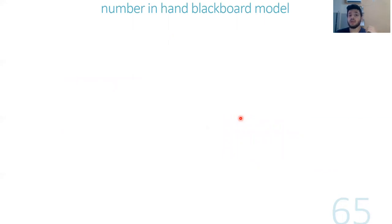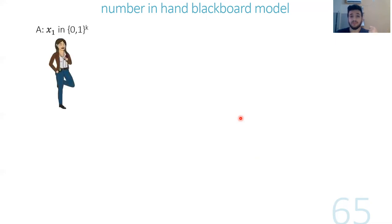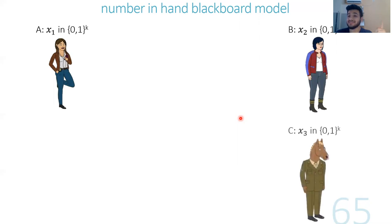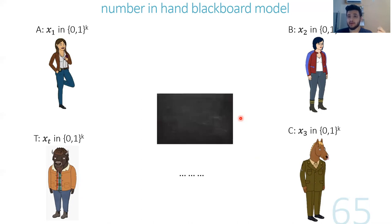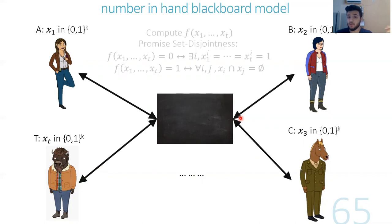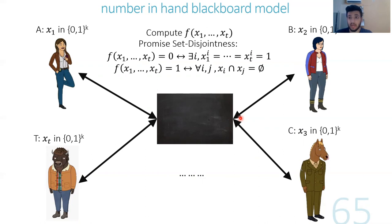I mean the number-in-hand blackboard model of computation. In this model, we have t players, and communication takes place by each player writing bits on a blackboard visible to all other players. Our complexity measure is the total number of bits written on the board throughout the protocol. We focus on the promise set disjointness problem in our construction.